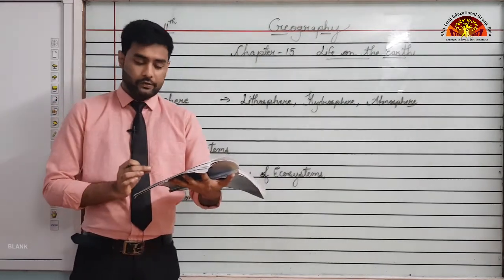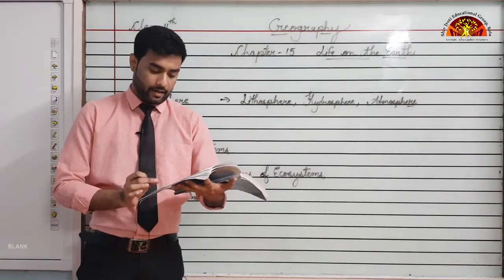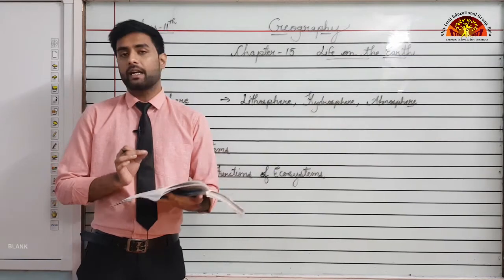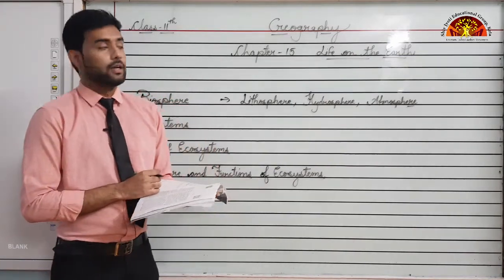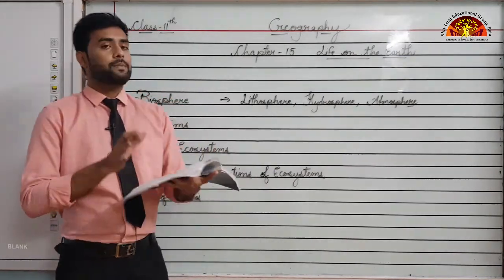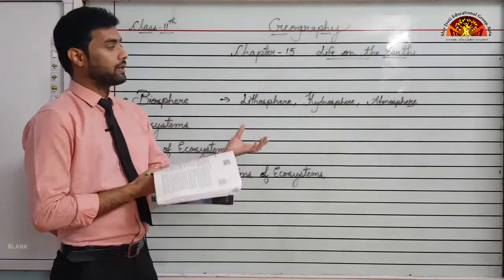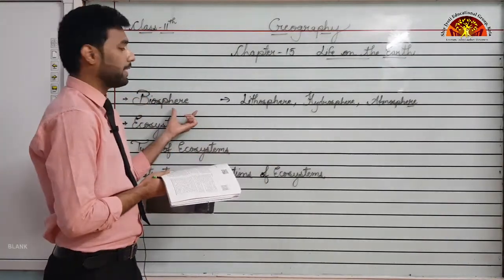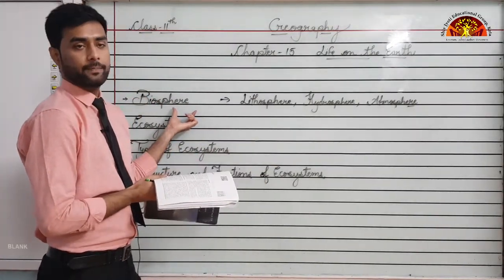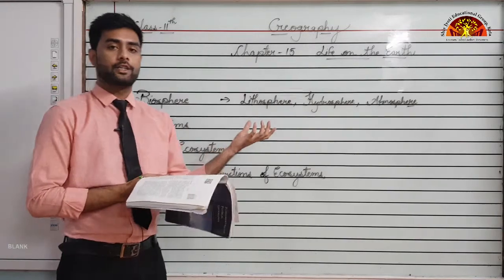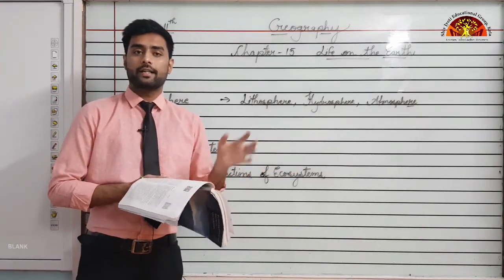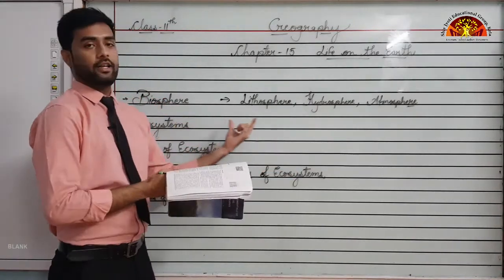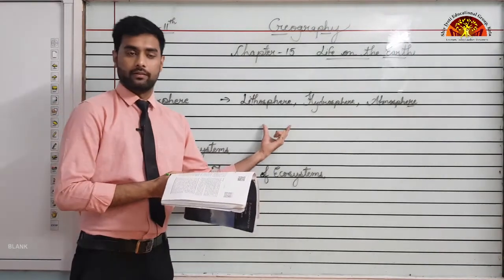The interaction of biosphere with land, air and water is important to the growth, development and evolution of organisms. There must be a balance between the land, water and air, as well as the abiotic components like temperature, rainfall and moisture — a balance between the living and the non-living.